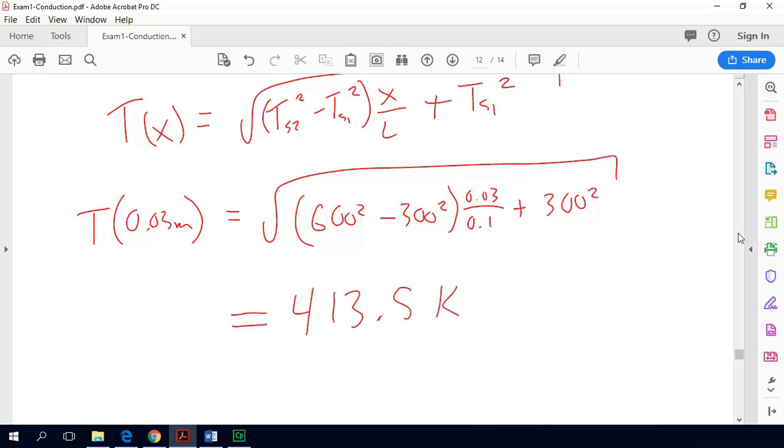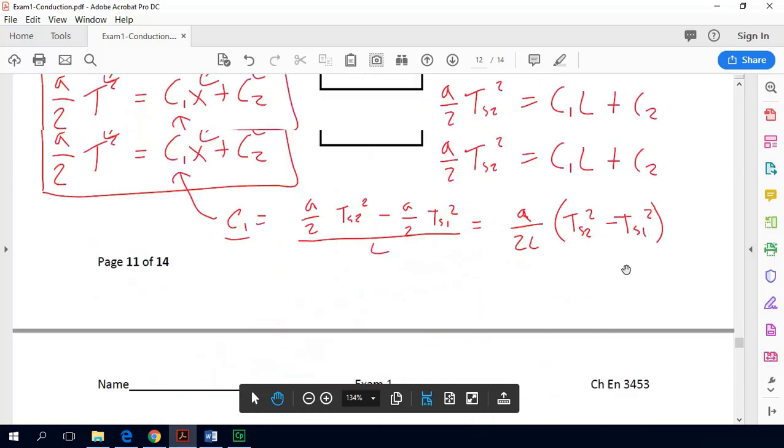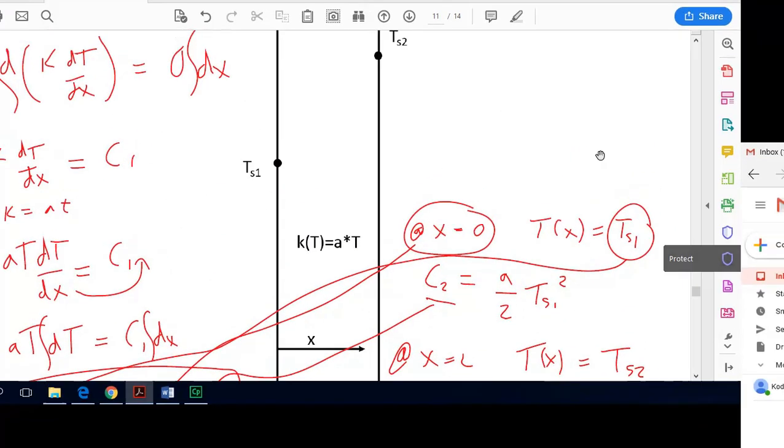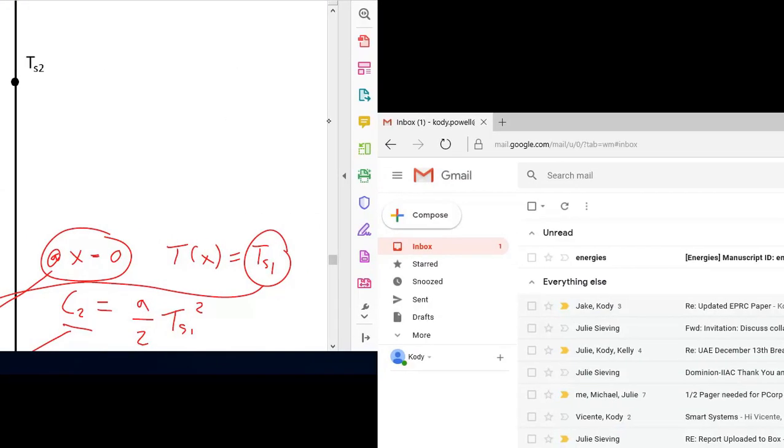So it's good that we got a number that is in between 300 and 600. That's a good check. And normally for a plane wall with constant thermal conductivity, we would see a temperature dependence that would be linear if you're at steady state and there's no generation in the wall. We have this squared dependency, so we end up with something that looks like that.